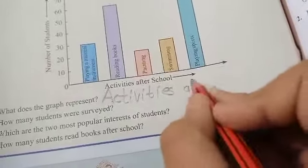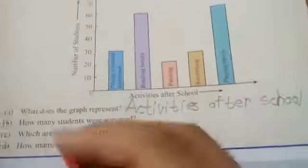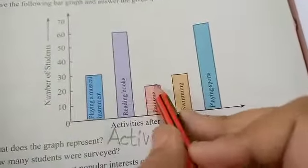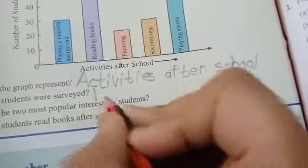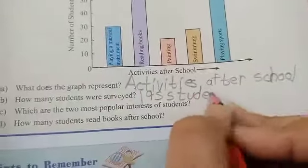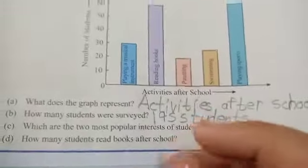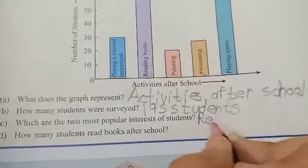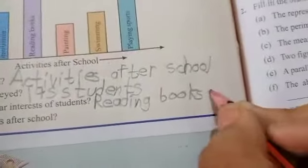Part A: What does the graph represent? We have made a bar graph showing student interests. Part B: How many students were surveyed? Part C: Which are the two most popular interests of students? The answer is reading books and playing sports.